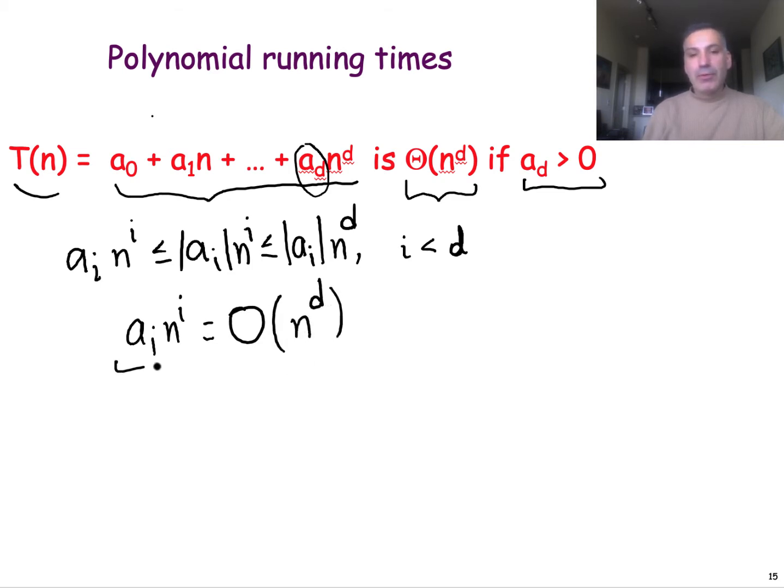What this shows is that the term a_i n^i is big O of n^d. Now that we have shown this, we can go back to the properties we learned in the previous part about additivity as well as the bottleneck property and see immediately that this whole sum is big theta of the first term because everything else is big O of this term.